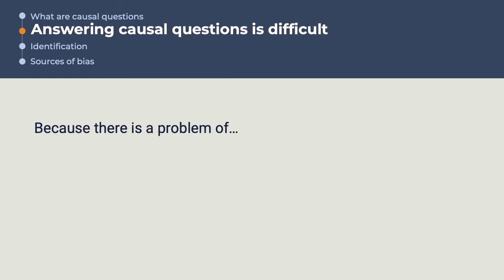The existence of one unobserved or counterfactual state of the world is the first reason why answering causal questions is difficult. We say that there is a fundamental problem of identification. This is also known as the fundamental problem of causal inference.